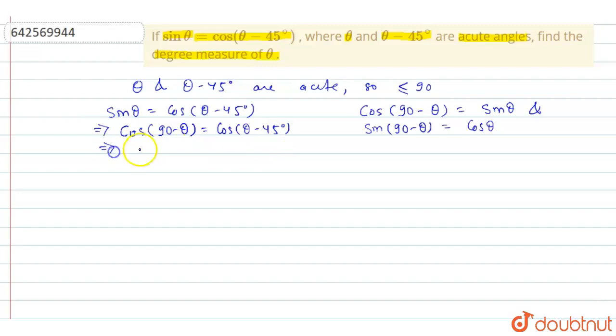Now the angles will be equated. So it will be 90 minus theta is equal to theta minus 45 degree which implies theta plus theta is equal to 90 degree plus 45 degree.